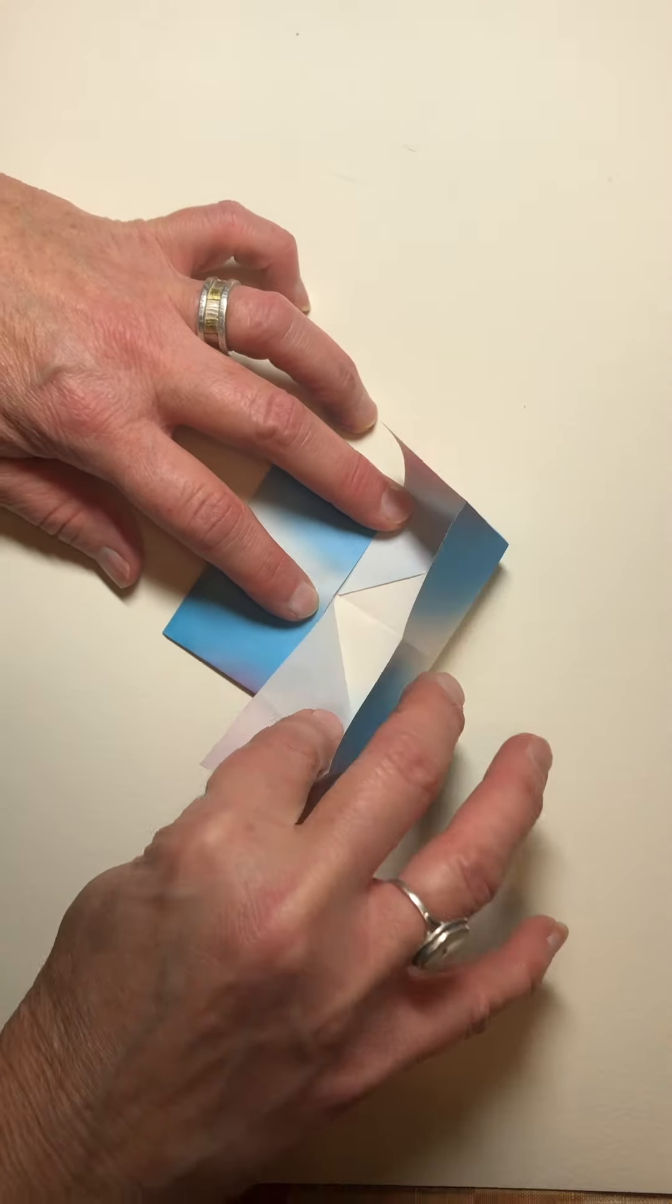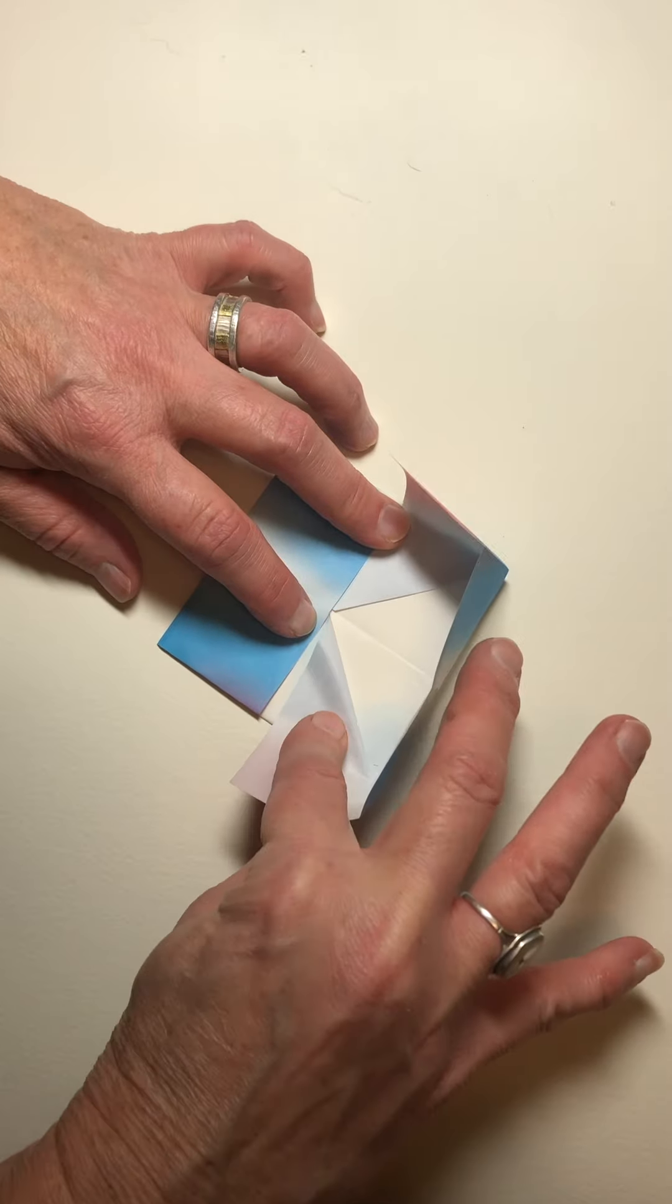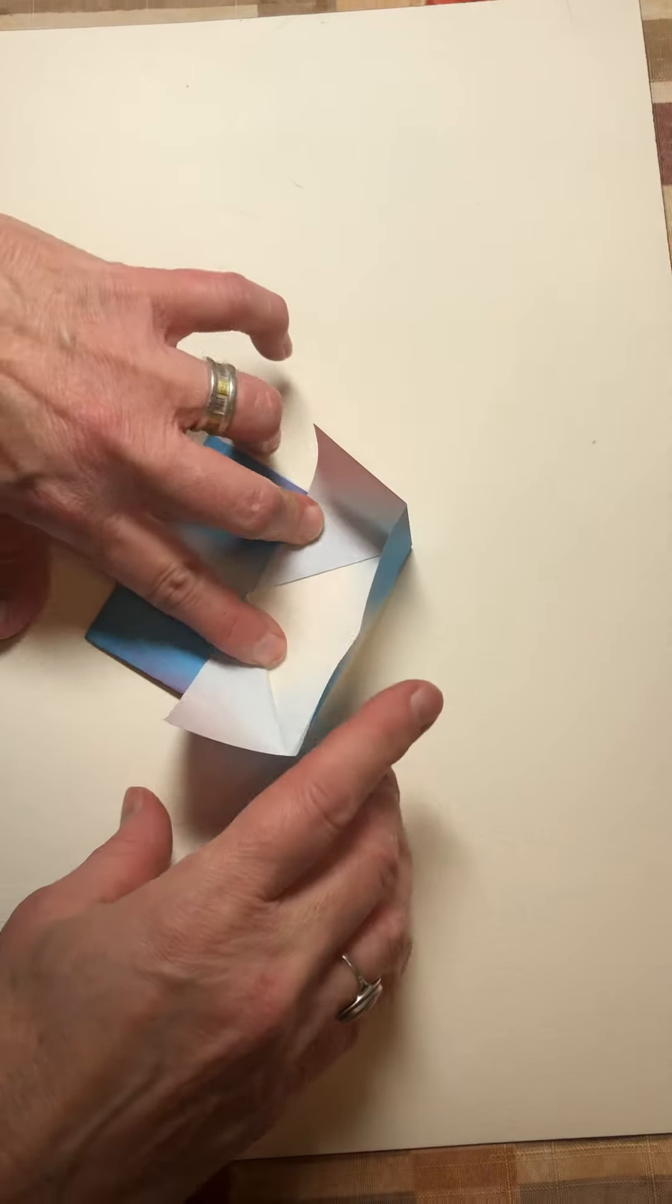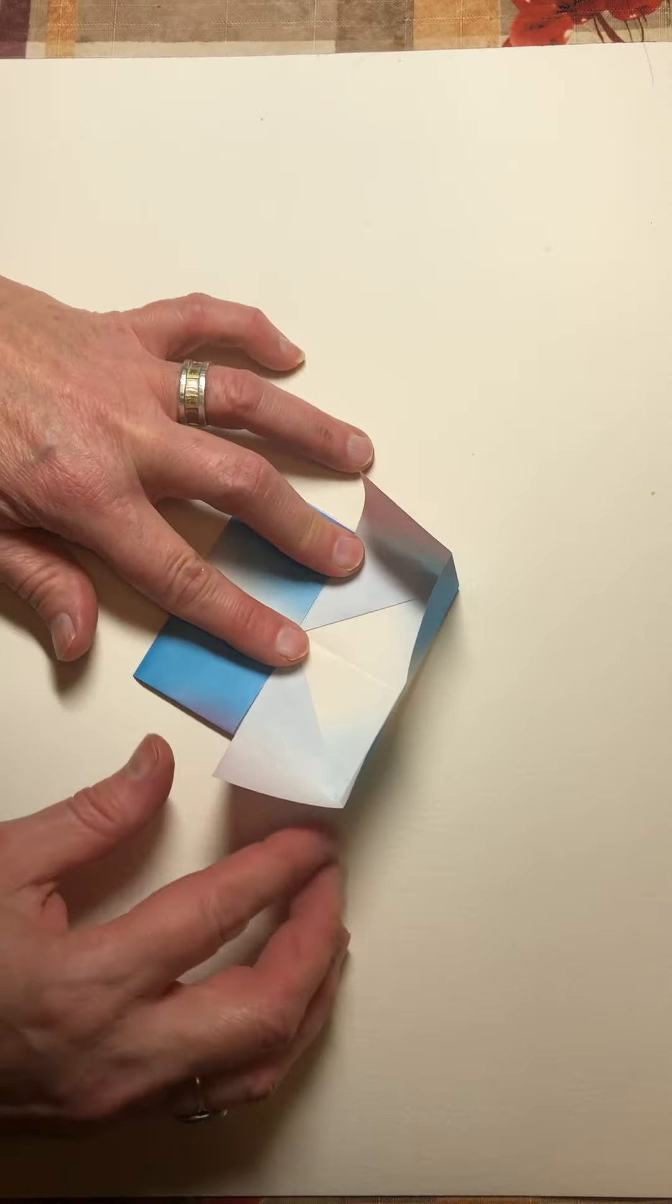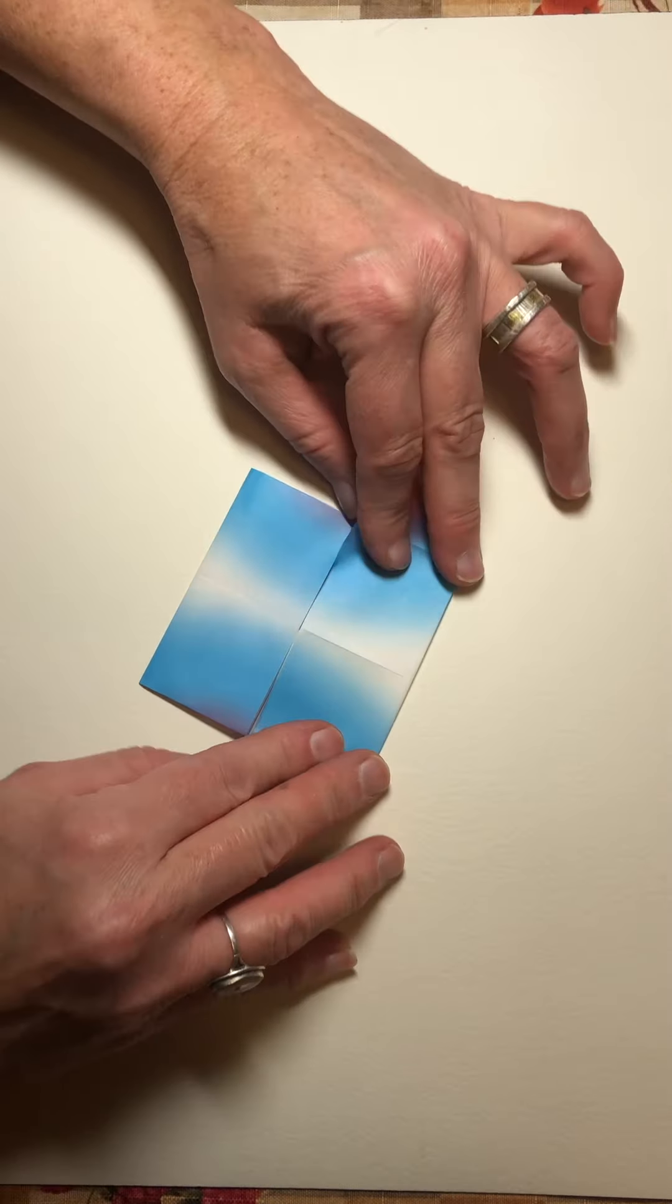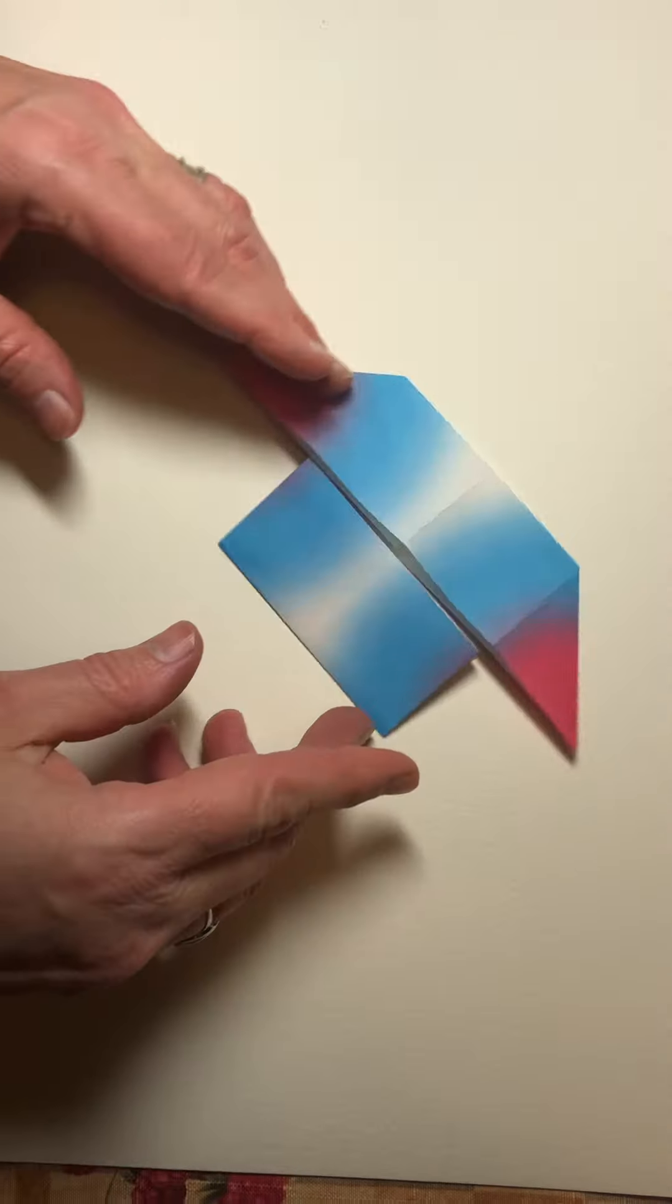We're gonna do this one over here. So I only want to make a valley fold right in there. Then we're able to do that squash fold and it looks like the little house.